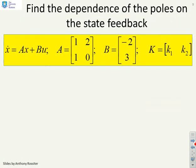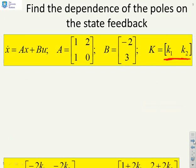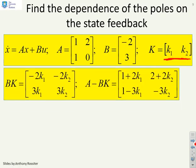Can we find the dependence of the poles on the state feedback? What I'm going to do now is make the parameters of this K variables, k1 and k2, and see if we can explore how the pole positions depend on those parameters. So now, if I calculate A minus BK, you see I get this matrix here.